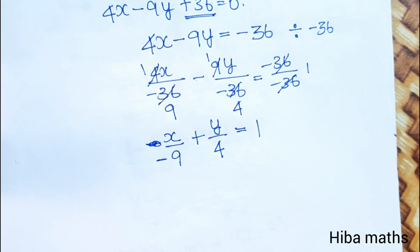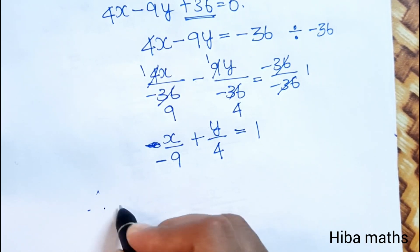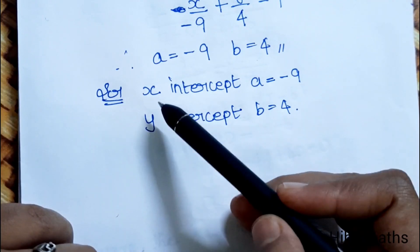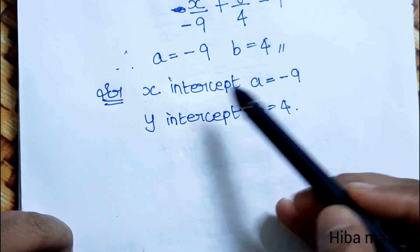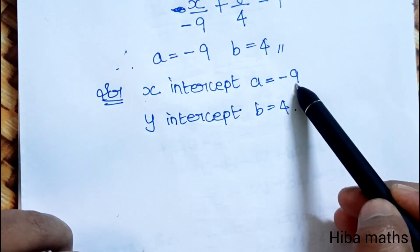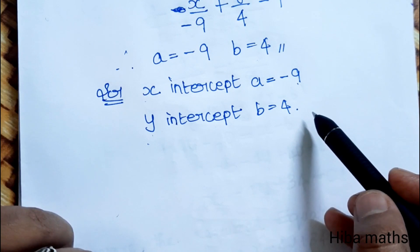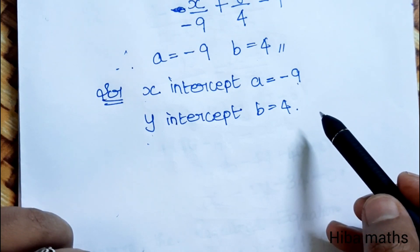Therefore, a is equal to minus 9 and b is equal to 4. So the x-intercept a equals minus 9, and the y-intercept b equals 4. This is easy to understand. Thank you so much for watching.